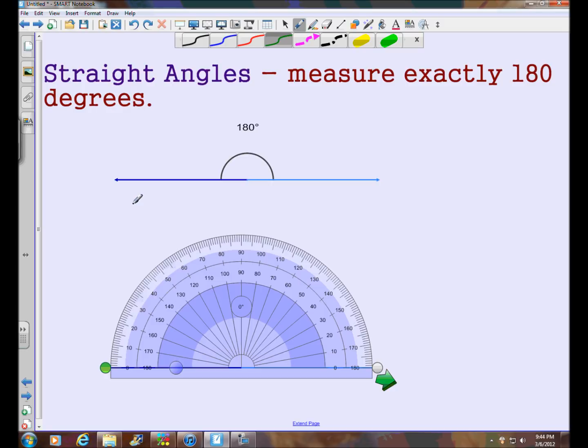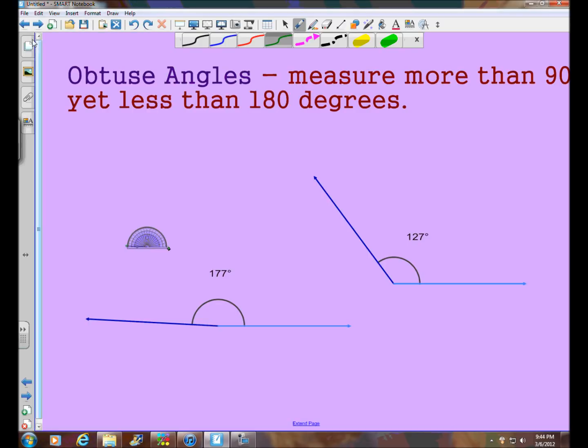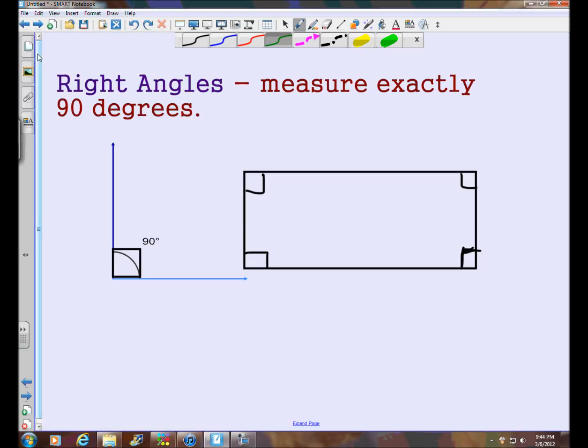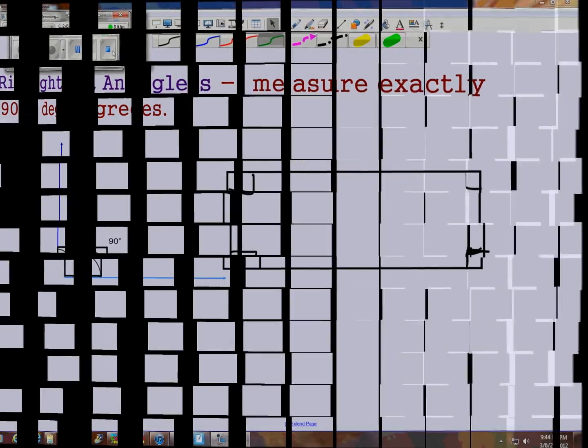But there it is. So there's straight angles, obtuse angles, acute angles, and right angles. Thanks for checking out Mr. Meredith's EduBlog. And we will see you again next time.